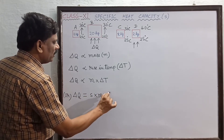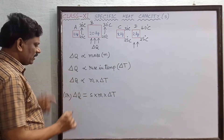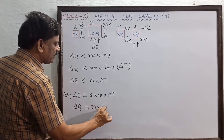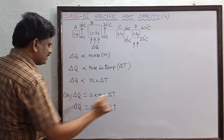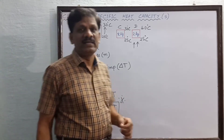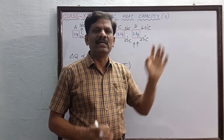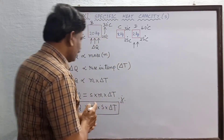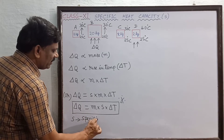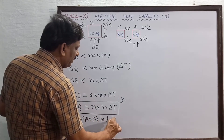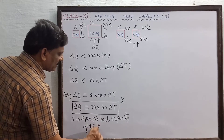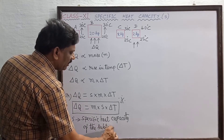The standard equation written in textbooks is: delta Q = m × s × delta T. This is the standard form everyone should remember for competitive exams as well as board exams. The constant of proportionality s is called the specific heat capacity — the specific heat capacity of the substance, whether solid, liquid, or gaseous.